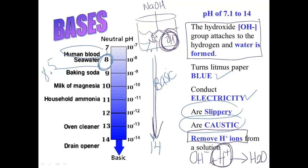Bases take hydrogen ions. Because they're removing hydrogen ions out of the solution, there's less hydrogen ions in the solution, which means the pH will increase.